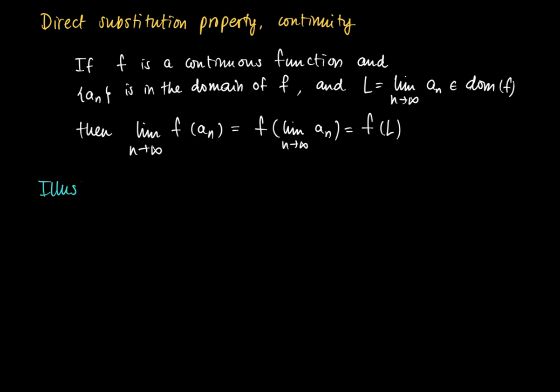As an illustration, consider the sequence aₙ = 8n/(n+1). This sequence has a limit: by dividing by n, we see that this limit equals 8/(1 + 1/n), and 1/n tends to 0, so the limit equals 8.